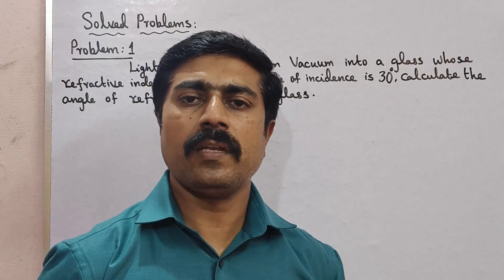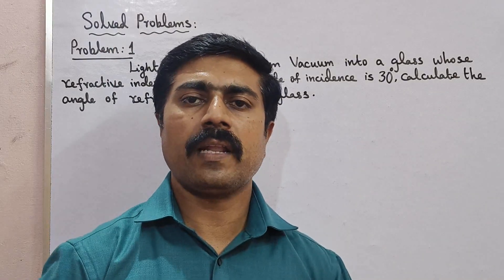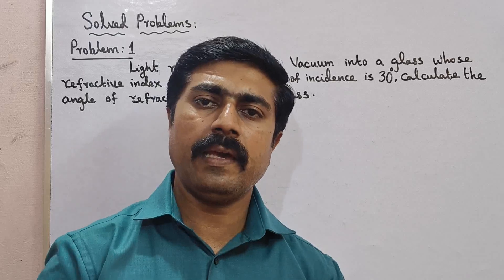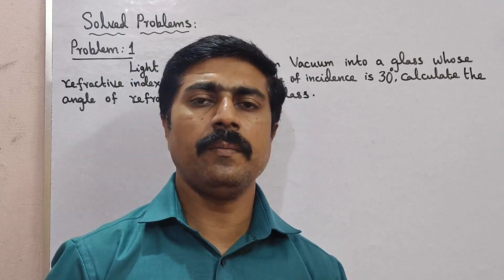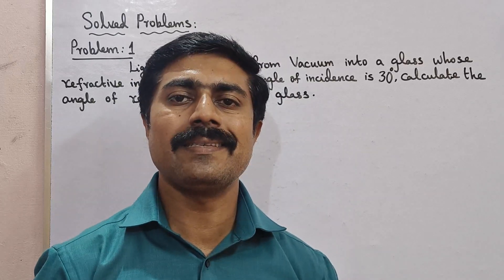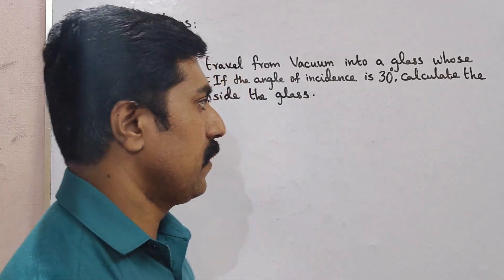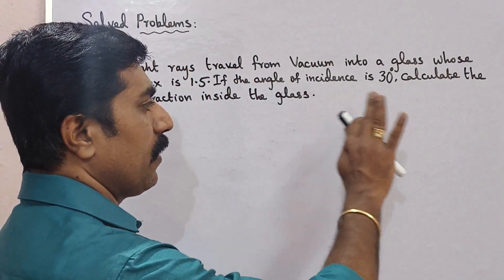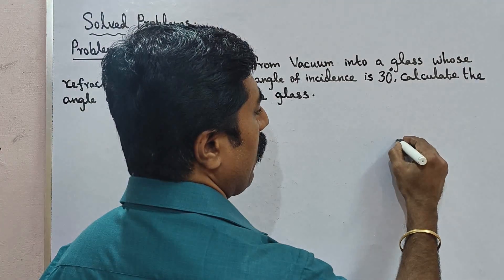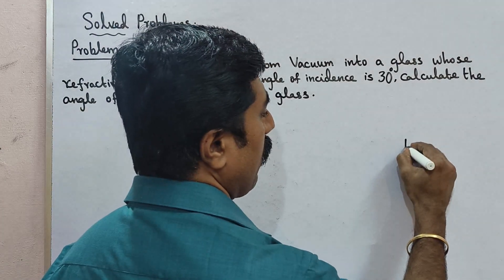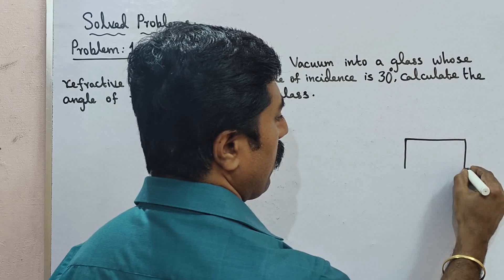We will talk about air, so we will talk about the rarer medium. Air or vacuum is the rarer medium — that is, its density is less than the denser medium. So let's draw air and introduce a glass piece.